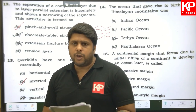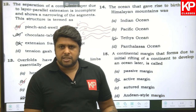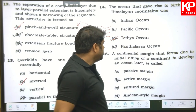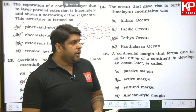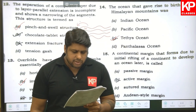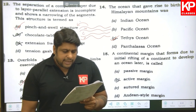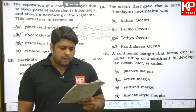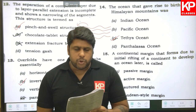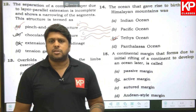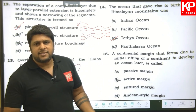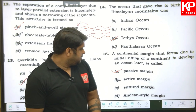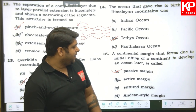Question fourteen continued: a continental margin that forms due to the initial rifting of a continent to develop an ocean later is our passive margin. The 15th answer is A.